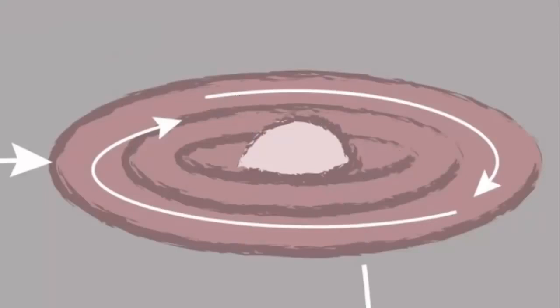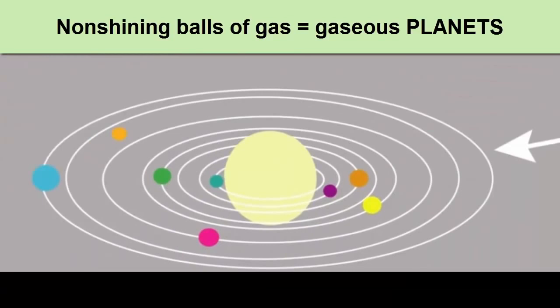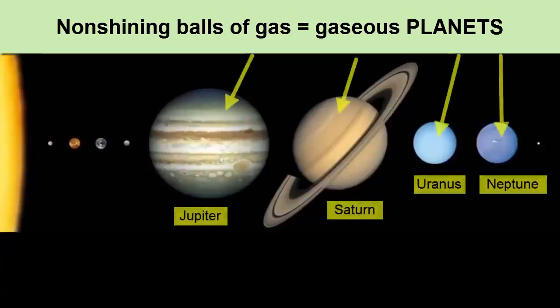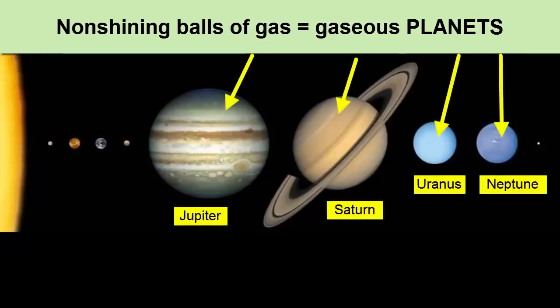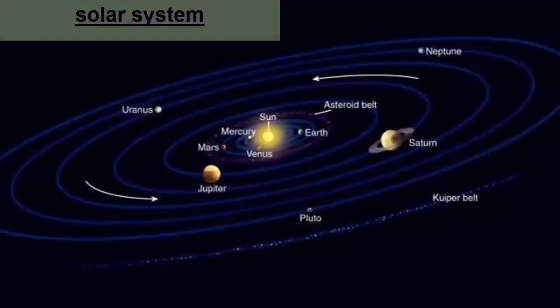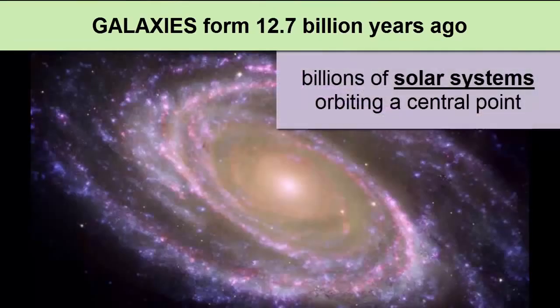Back to the rotating disk, gas that is not part of the center star can go through similar collisions and accretion and create smaller, non-shining balls of gas that orbit the larger center star. These smaller balls with no nuclear fusion are called gaseous planets. The combination of a star and its orbiting planets is called a solar system. Now imagine you have billions of these solar systems developing from the massive amounts of gas in the early universe. Each system will feel gravitational attraction to the other systems around it, and they will clump together in collections of solar systems called star clusters or galaxies, depending on the number of stars and shape of the collections.